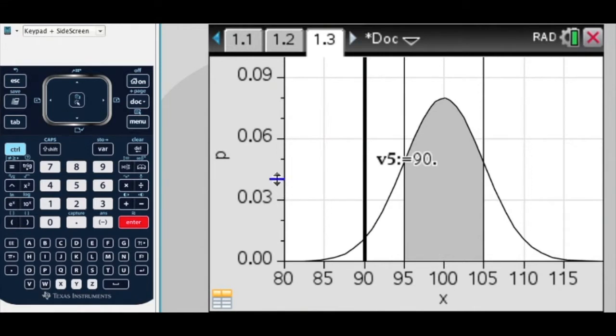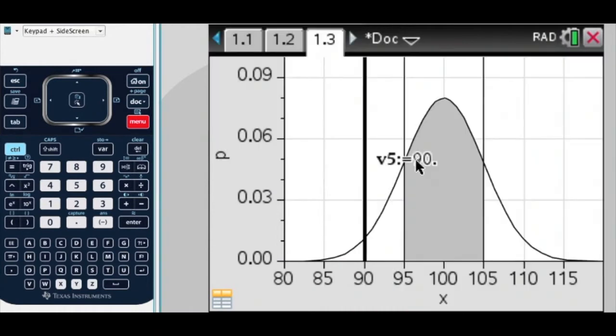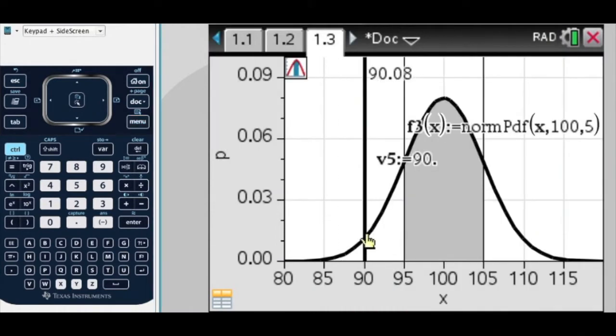And now, I want to shade under that. Menu, analyze, shade under. Okay, 0.14 is just in there. Okay, so that's the probability.